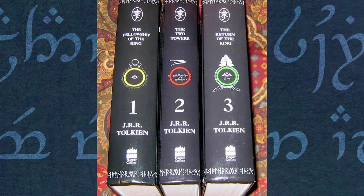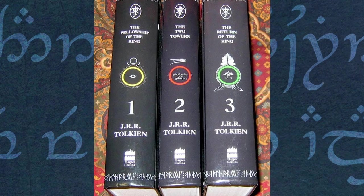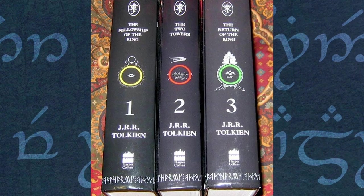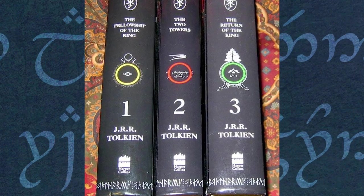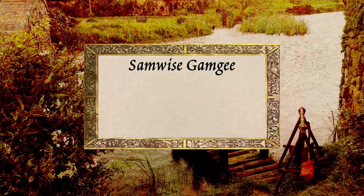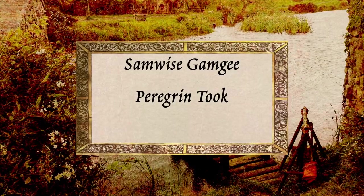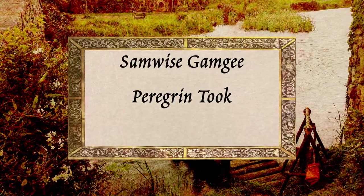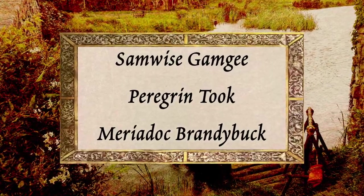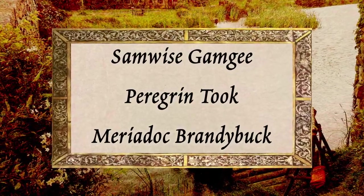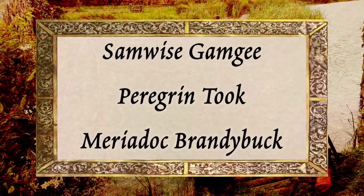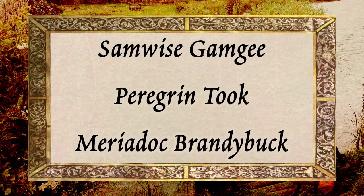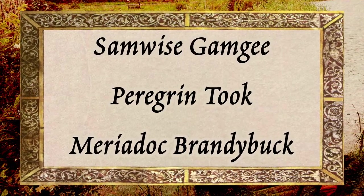Next, I took a look at the names of Frodo's three companions from the Fellowship of the Ring: Samwise Gamgee, Peregrin Took, and Meriadoc Brandybuck. These are great, memorable names, but they are irregular, meaning that they don't split and combine well.